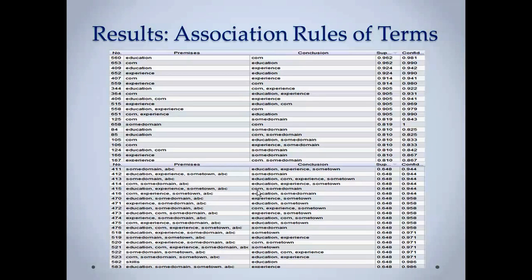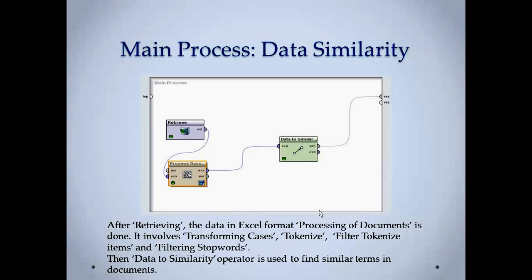As you can see in the results, education and experience have occurred 90% of the times and to occur it with the com, it is 97% is the confidence. It means that for example, if you take education, experience and some term ABC comes 64 times of the data, it is likely to occur with com and some domain 94% of the times. If this much words are appearing, then other words might appear with them. It is a confidence that is going to appear with them.